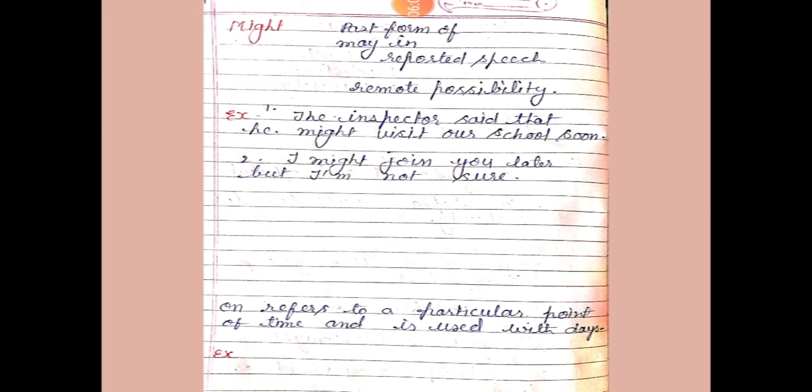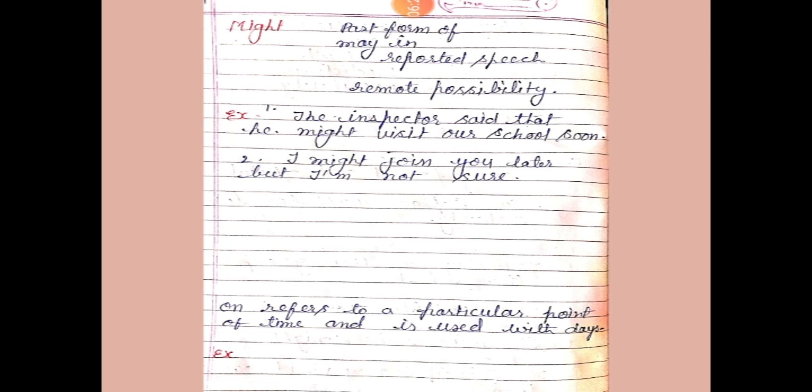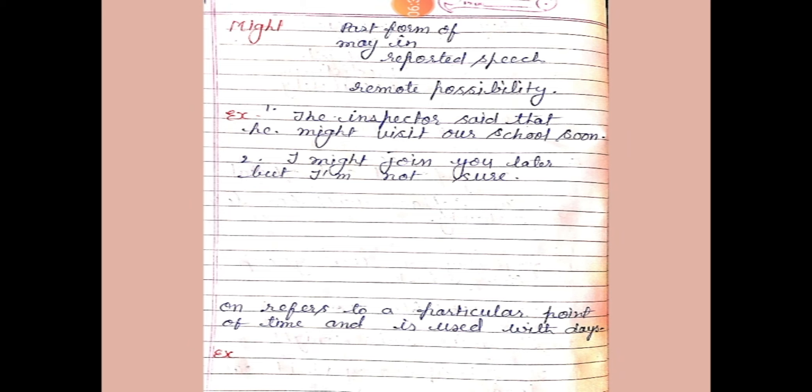'Might' is the past form of 'may.' It is always used in reported speech and for remote possibility — meaning a weak possibility where there are very few chances of something happening. Example: 'The inspector said that he might visit our school soon' — this is remote possibility. 'I might join you later, but I am not sure' — this is also a weak possibility.